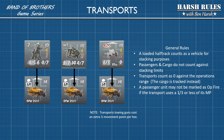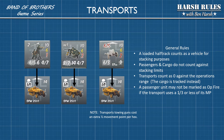In the rules of movement, the most complicated unit to learn is the transport, or half-track. A half-track can transport one squad, one weapon team, or one gun. Some general rules: a loaded half-track counts as a vehicle for stacking purposes; passengers and cargo do not count against stacking limits; transports count as zero against the operations range — the cargo is tracked instead. A passenger unit may not be marked as op-fire if the transport uses a third or less of its movement points. And if a transport is towing a gun, it costs an additional half-movement point per hex.